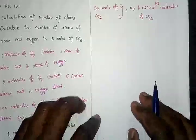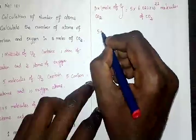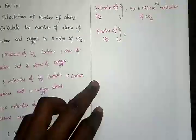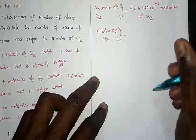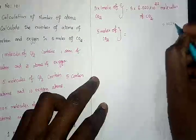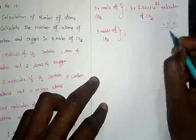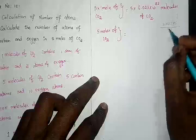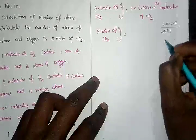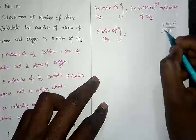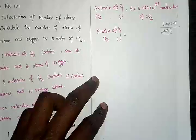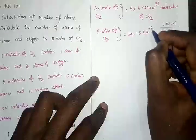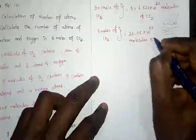Let me do the calculation: five times 6.023 × 10²³. Multiplying 6.023 by 5 — three fives are fifteen, carry one; two fives are ten plus one is eleven, carry one; zero times five is zero plus one is one; six times five is thirty. So the result is 30.115, and I need to move three decimal places, giving 30.115 × 10²³.